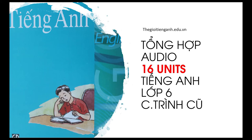Section B: Food and Drink. Listen and repeat. Apple. Orange. Banana. Water. Rice. Milk. Meat. Vegetables. Listen and repeat, then practice in pairs. What is for lunch? There is some meat and some rice. Are there any noodles? No, there aren't any noodles. Is there any fruit? Yes, there is some fruit. There are some oranges and some bananas. What is there to drink? There is some water. Is there any milk? No, there isn't any milk.